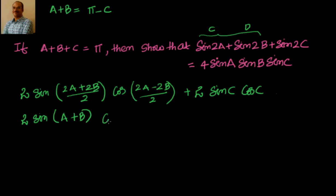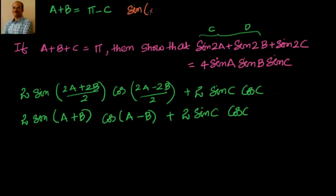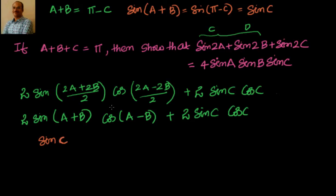Now I need to take sin c common. Let's find the value of sin(a+b). Applying sin on both sides of a plus b equals pi minus c, we get sin(a+b) equals sin(pi minus c), which equals sin c. So I can write sin c here — that's how we got this substitution.